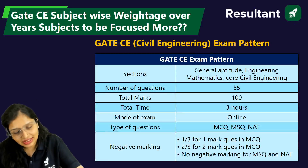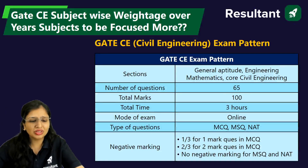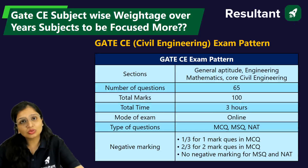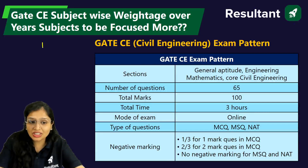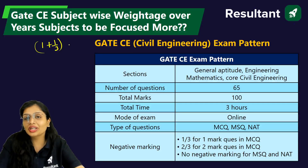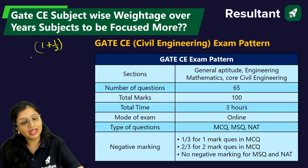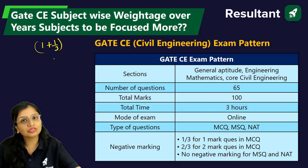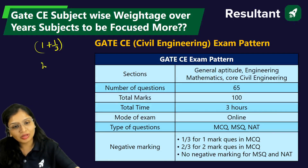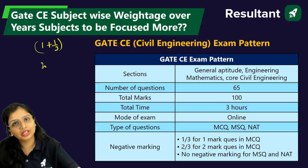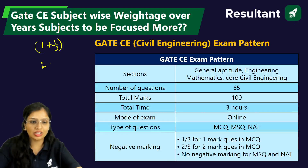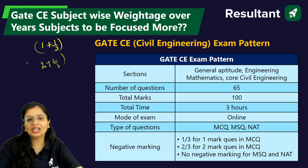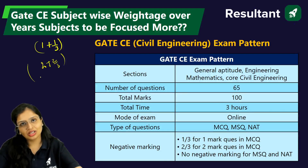One important clarification: if you get a one-mark question wrong, it's not just the one mark that's gone — it's one mark plus 1/3 mark for the incorrect attempt. Similarly, if you get a two-mark question wrong, it's two marks plus 2/3 marks that are lost, not just the two marks.